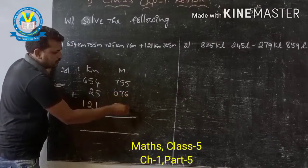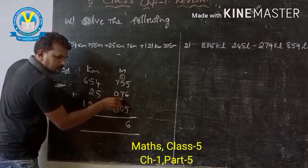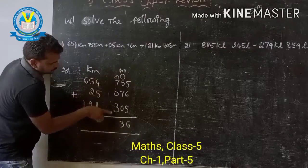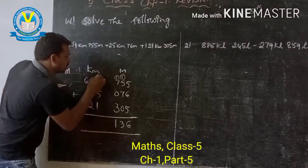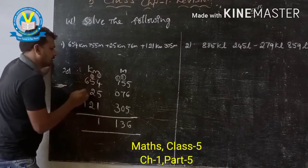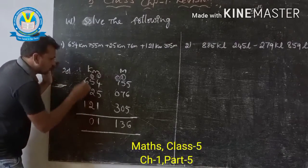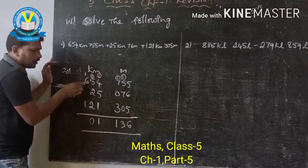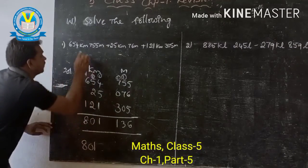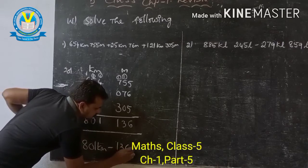5 plus 6 is 11 — write 1, carry 1. 6 plus 7 is 13, plus 7 is 17, write 3 carry 1 — wait, 13: write 3, carry 1. 8 plus 3 is 11 — write 1, carry 1. 5 plus 5 is 10, plus 1 is 11 — write 1, carry 1. 6 plus 2 is 8, plus 2 is 10 — write 0, carry 1. 1 plus 6 is 7, plus 1 is 8. So the answer is 801 kilometers and 136 meters.